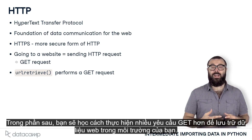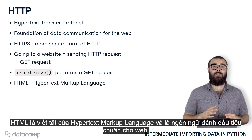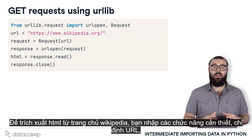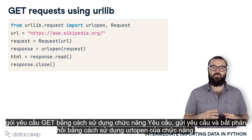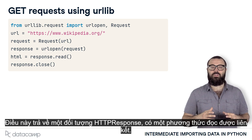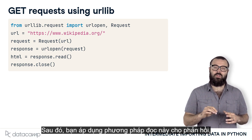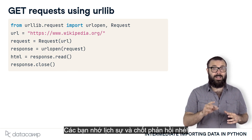In the following, you'll learn how to make more GET requests to store web data in your environment. In particular, you'll figure out how to get the HTML data from a web page. HTML stands for Hypertext Markup Language and is the standard markup language for the web. To extract the HTML from the Wikipedia homepage, for example, you import the necessary functions, specify the URL, package the GET request using the function request, send the request and catch the response using the function URL open. This returns an HTTP response object which has an associated read method. You then apply this read method to the response, which returns the HTML as a string, which you store in the variable HTML.